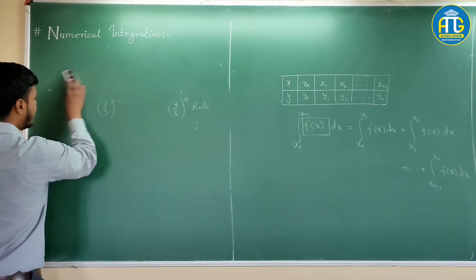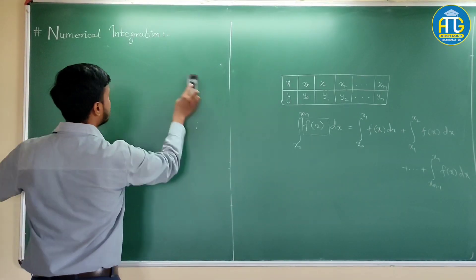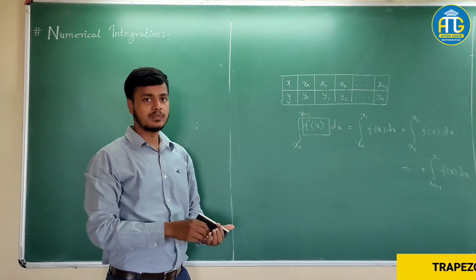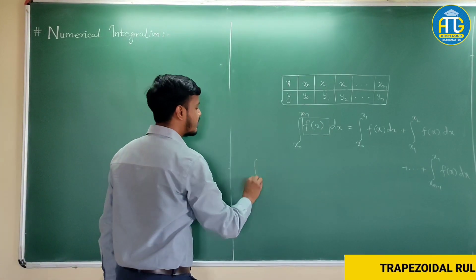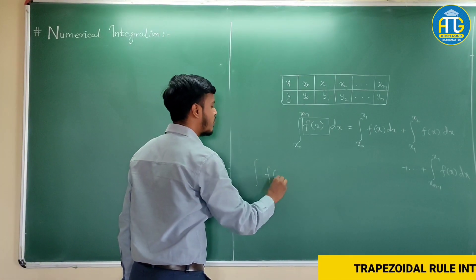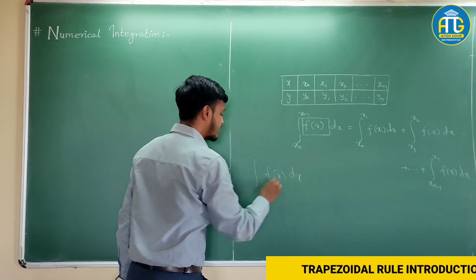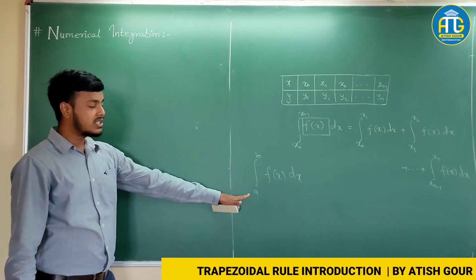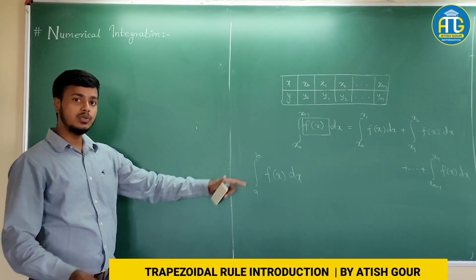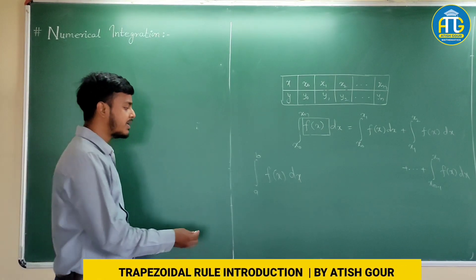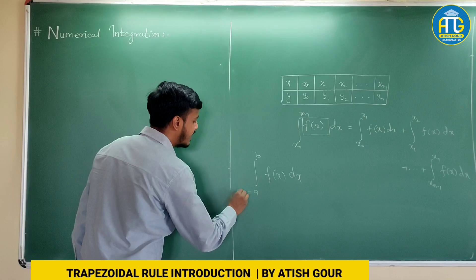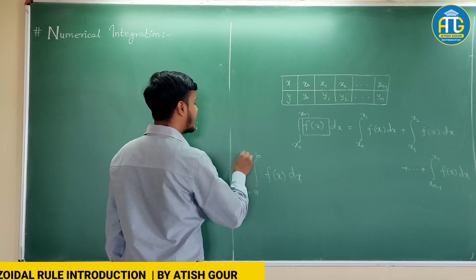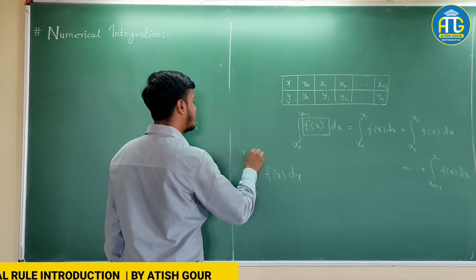For the trapezoidal rule, suppose you are given some data, or suppose you have to find out the integration of f(x) dx from a to b. What we need to do is divide this interval a to b into n sub-intervals, and we will write x0 equals a, then x1, then x2, and at last xn.